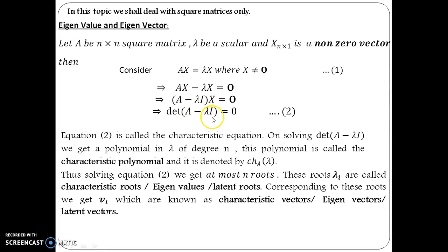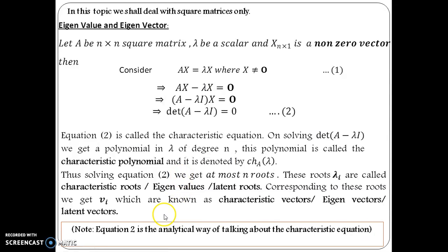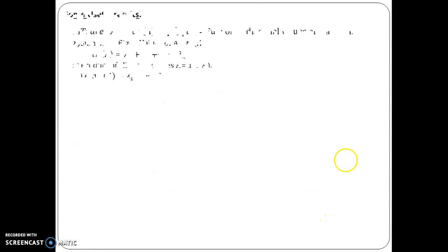But yes, when we will solve it, we will have a characteristic equation from this, or when you solve this LHS over here, it will show you it is a polynomial. It does not look like but yes, it is a polynomial. And so, that is why I am mentioning over here, equation 2 is the analytical way of talking about the characteristic equation.